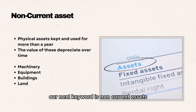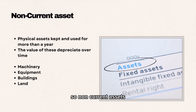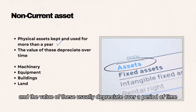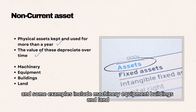Our next keyword is non-current assets. Non-current assets are physical assets that are kept and used for more than a year, and the value of these usually depreciates over a period of time. Some examples include machinery, equipment, buildings, and land.